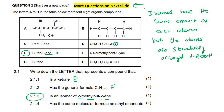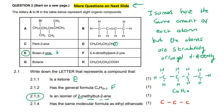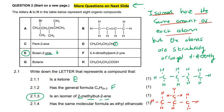Isomers have the same amount of each atom, but the atoms are structurally arranged differently. For example, one example is butane — if you count all the carbons and hydrogens, you get 4 carbons and 10 hydrogens. But another molecule could also have 4 carbons and 10 hydrogens, yet be arranged differently. So isomers have the same amount of each atom, but the atoms are structurally arranged differently.